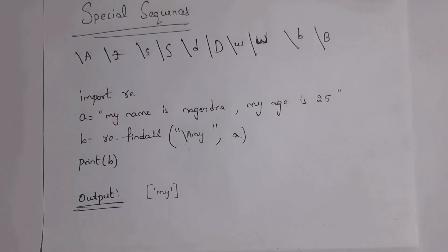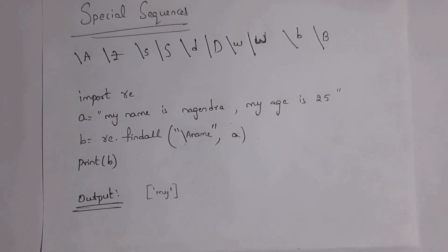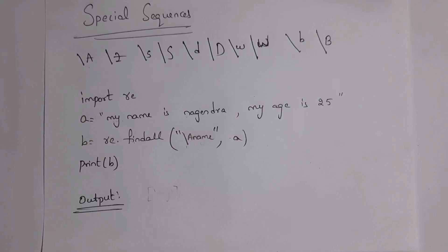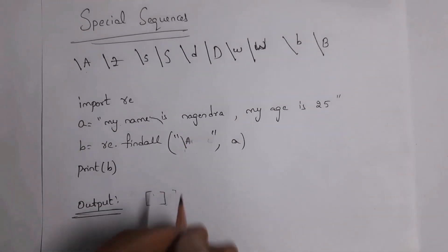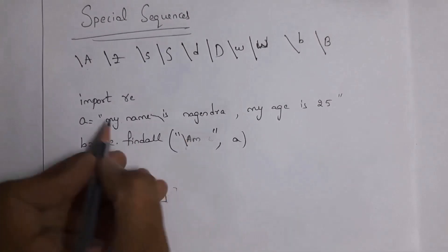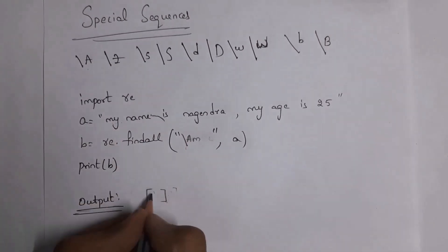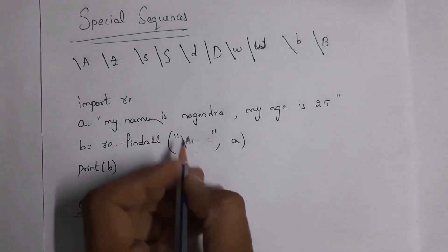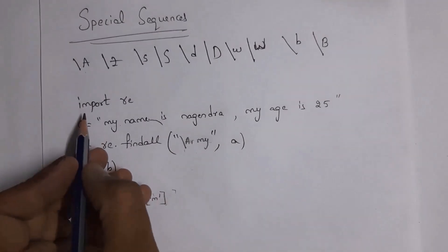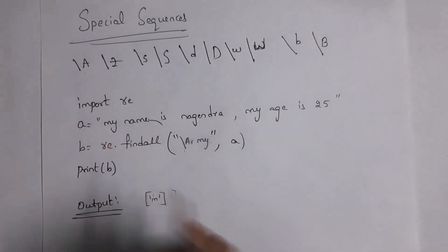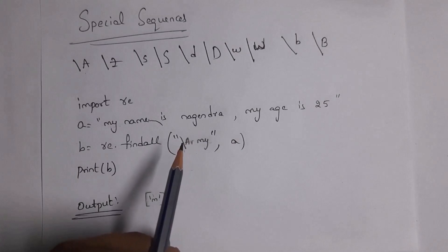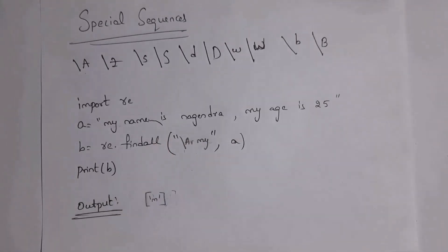For example, if I use `\Aname`, it checks whether 'name' is at the start. The starting string is 'my', not 'name', so the output is an empty list. If I write `\Am`, it checks whether 'm' is at the start — yes, so output is `['m']`. Also, don't give a space after writing `\A`; write `\A` immediately followed by the characters you want to search.